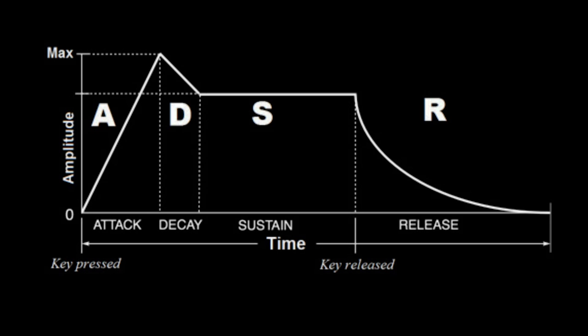The third part of TKARR is the attack. Attack times range wildly — they're highly dependent upon whatever program material you are trying to compress. You'll set attack times differently for drums versus acoustic guitar, distorted electric guitar, or background vocals. The best way to understand how to set your attack time is to understand the ADSR envelope, which stands for Attack, Decay, Sustain, and Release.